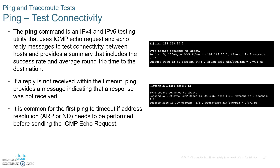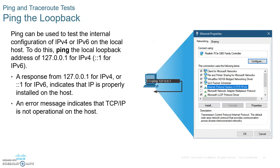When troubleshooting connectivity, you should ping the default gateway and then the remote host. Whenever you're checking for connectivity — even for a remote host outside your LAN — first ping the loopback, then ping the default gateway, then ping the remote host. If the remote host is very far away and your packet got lost due to time exceeded — meaning the TTL number reached zero — ICMP will create a time exceeded packet and send it back to you, but you won't know exactly where the failure occurred.